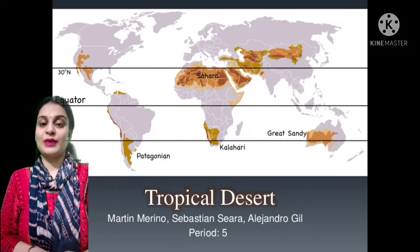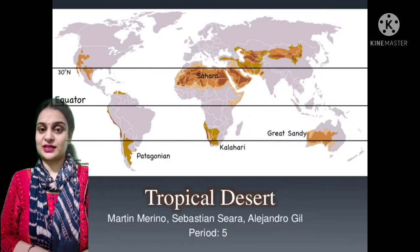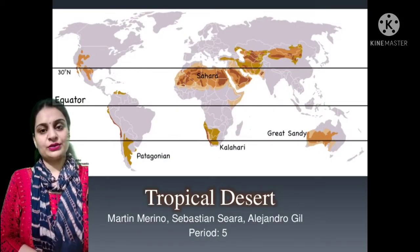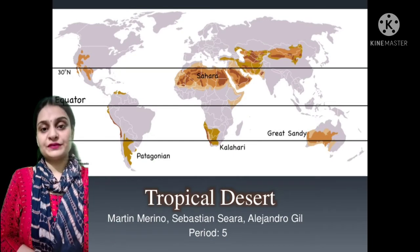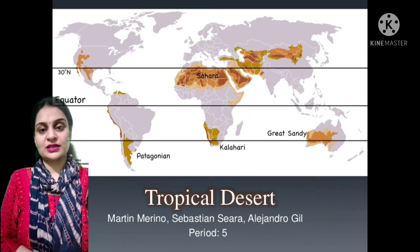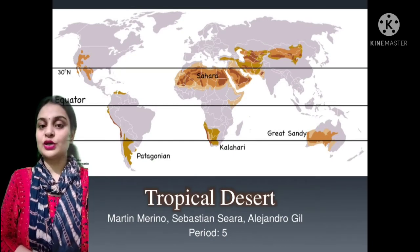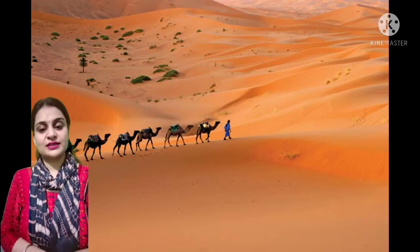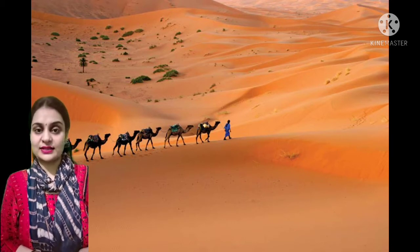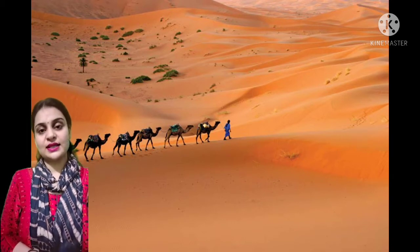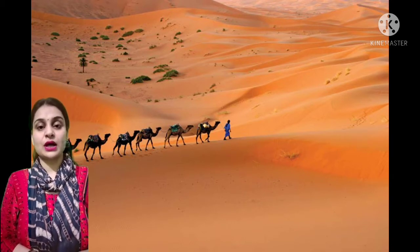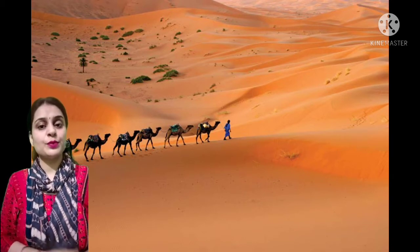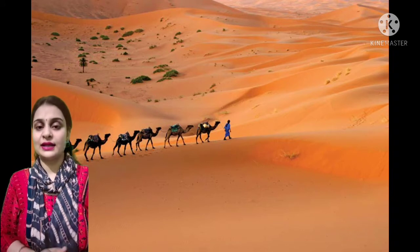Good morning students. Welcome to your social studies class. Today we are going to start our fifth chapter of social studies which is tropical deserts. Firstly we should discuss what deserts are. A desert is an area which is covered by sand and receives very less rainfall.